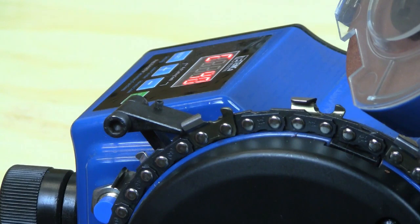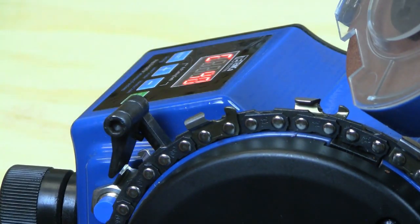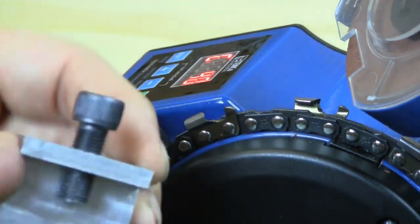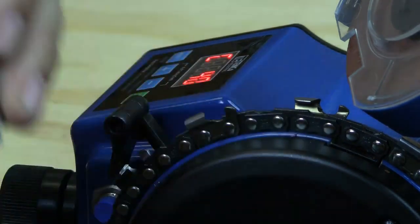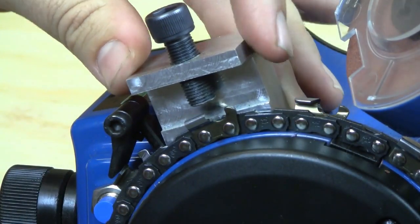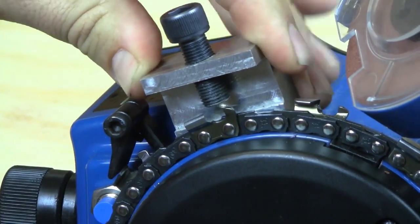To do that, the first step is to flip the head on the advance arm back out of the way and then get your depth gauge measurement tool. It slides down into the slot where the advance arm rides and sits down snugly in that slot.